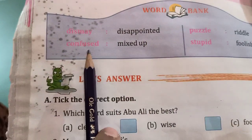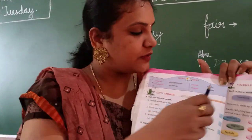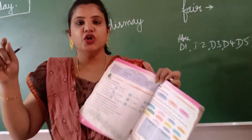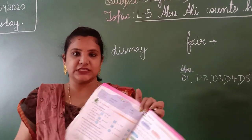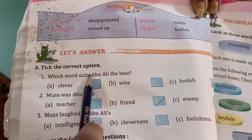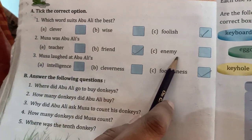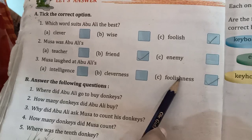Here you can see the word bank. Dismay means disappointed. Confused means mixed up — you don't know what to do, what to think, how to think. Puzzle means riddle — you ask a question and you have to think of the answer. Stupid means foolish. Abu Ali was so foolish not to count the donkey he was sitting on. Now, tick the correct options: which word suits Abu Ali the best — clever, wise, or foolish? The answer is foolish. Musa was Abu Ali's teacher, friend, or enemy? Musa was Abu Ali's friend. Musa laughed at Abu Ali's intelligence, cleverness, or foolishness? Foolishness.